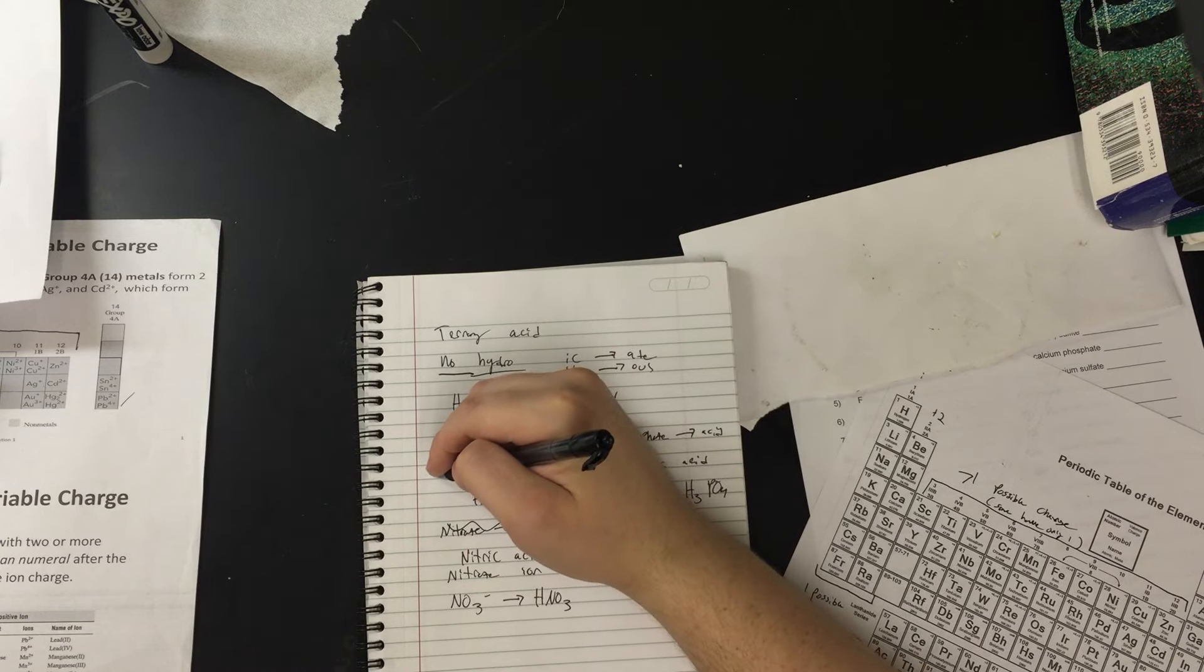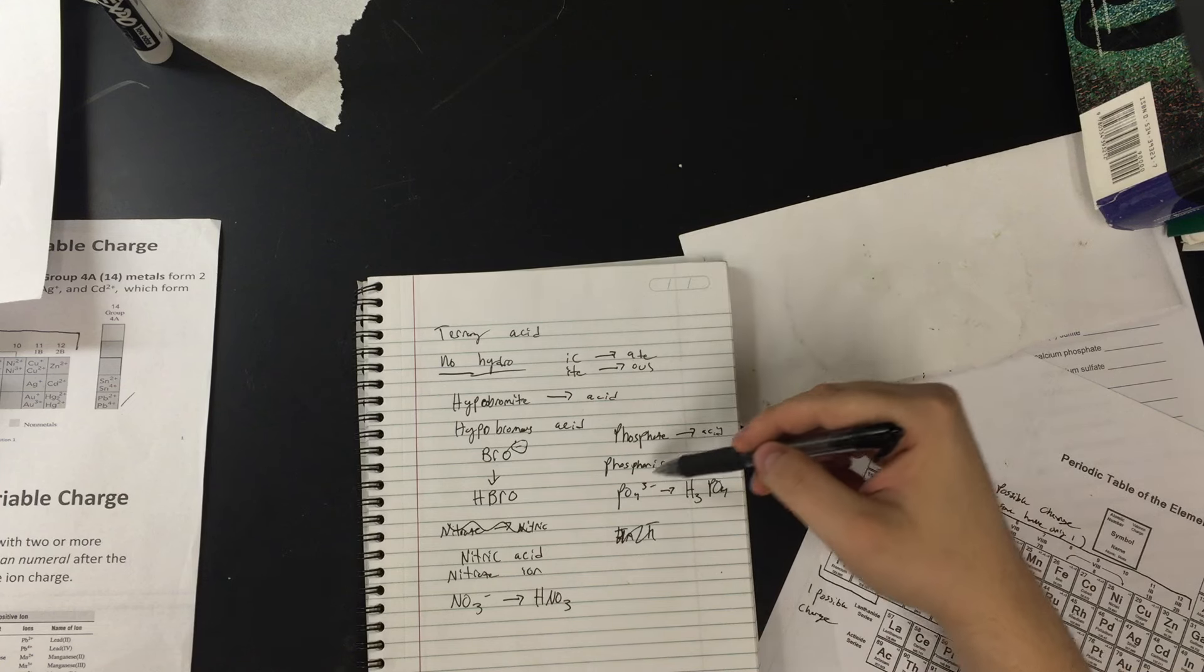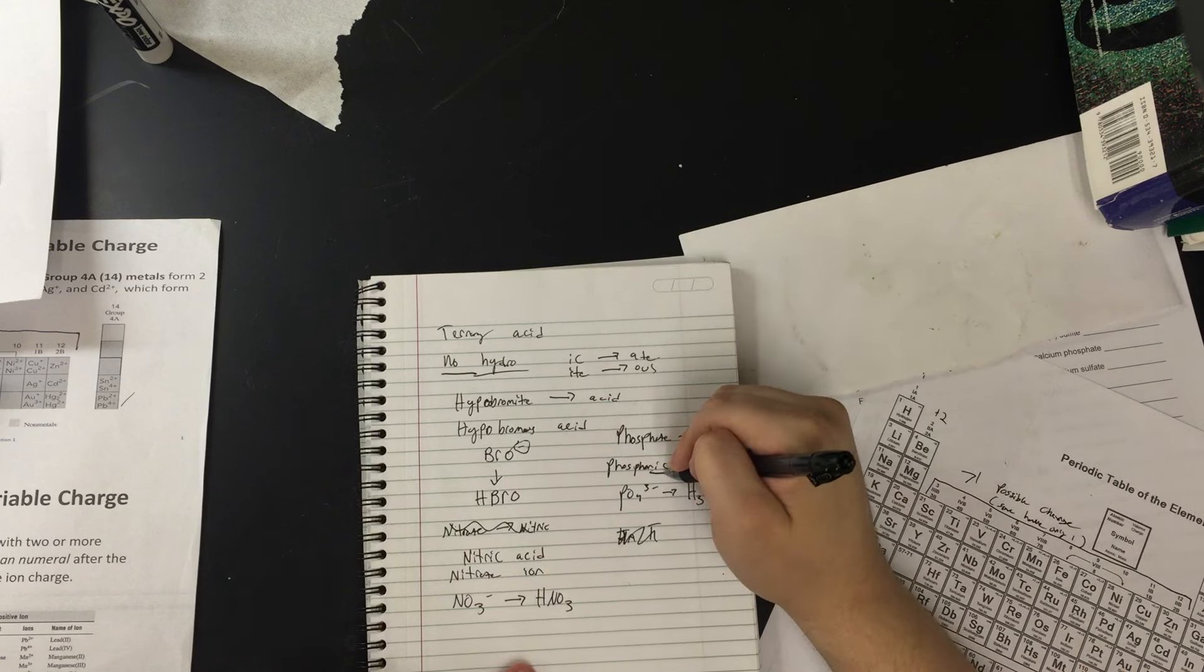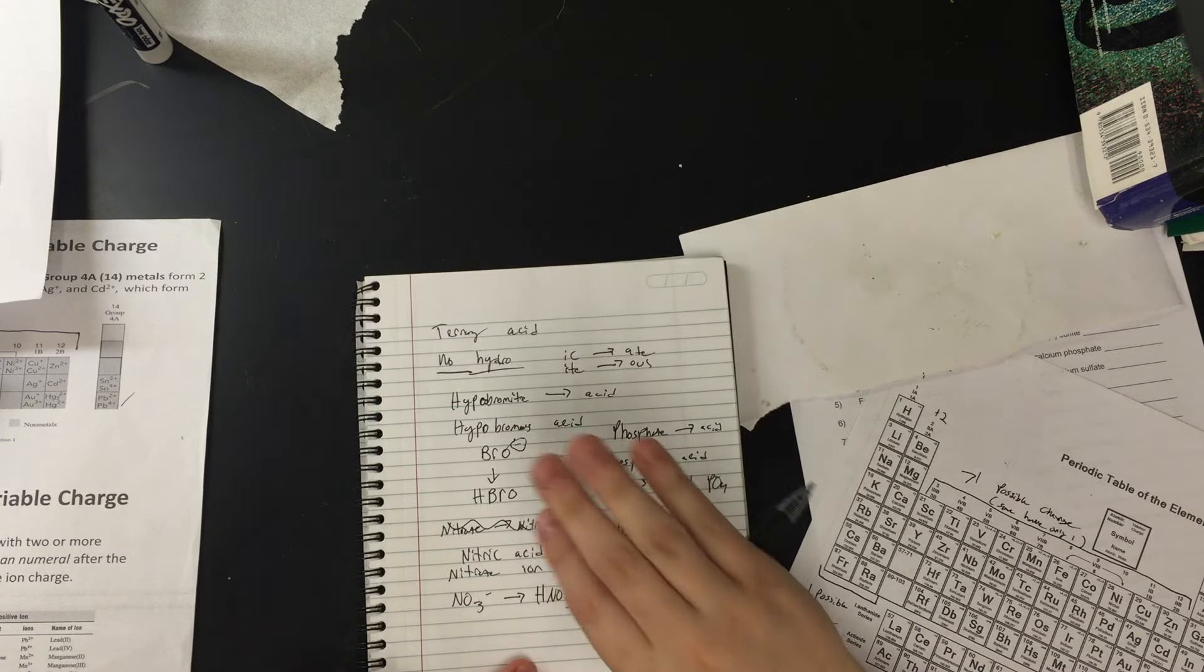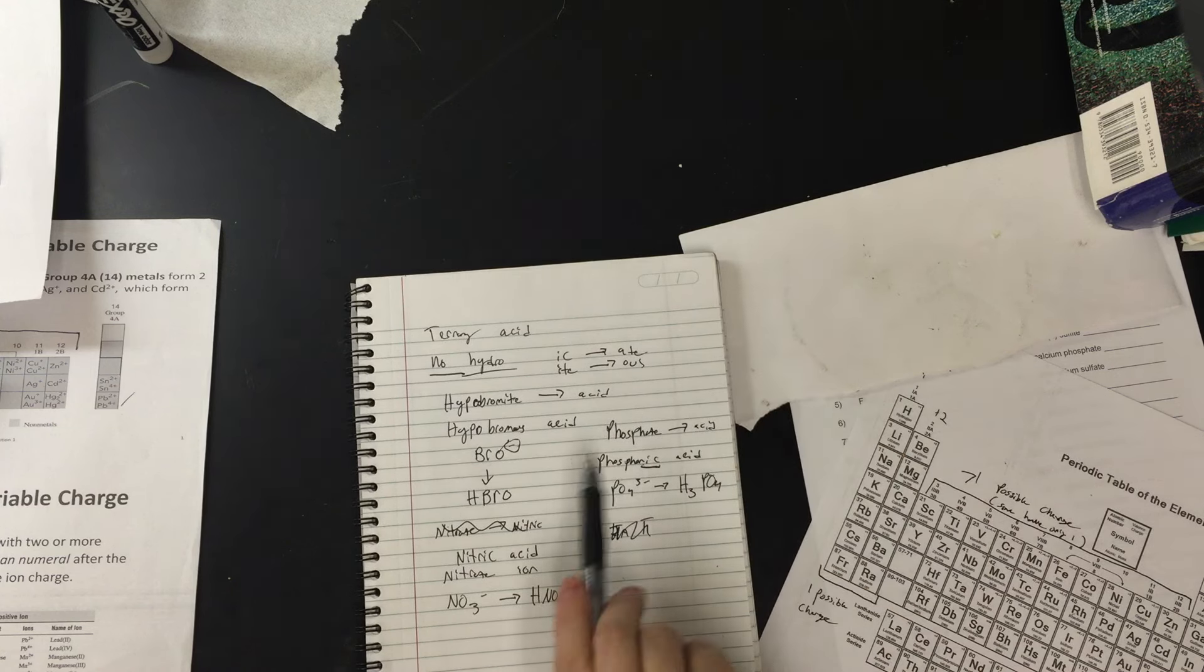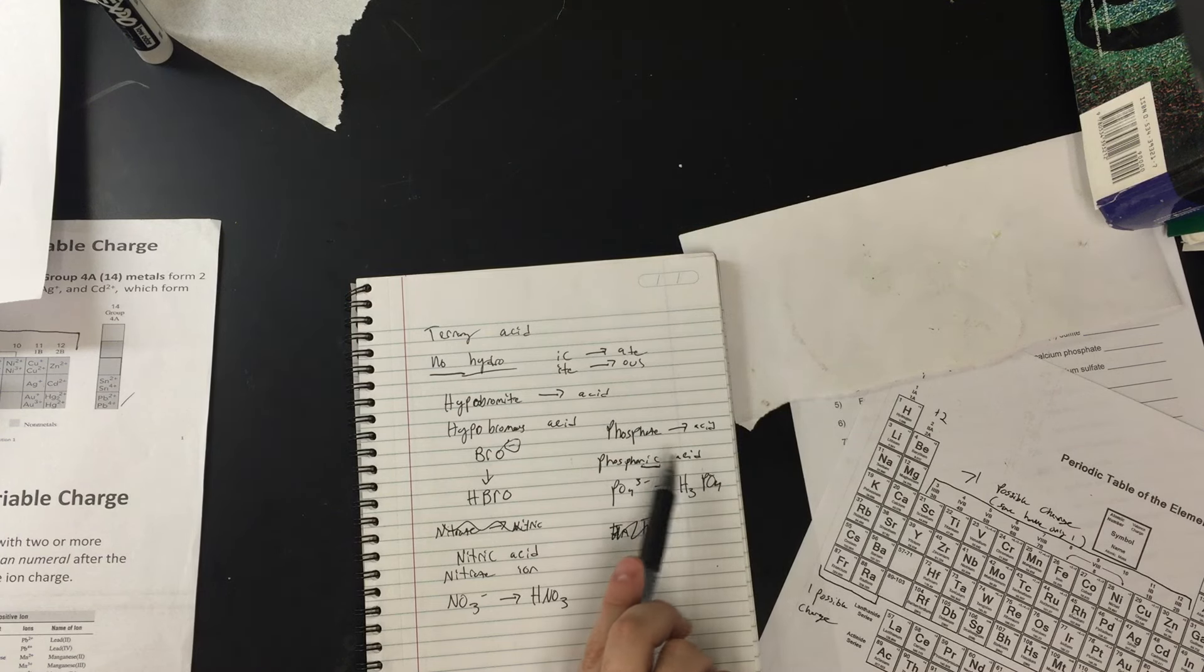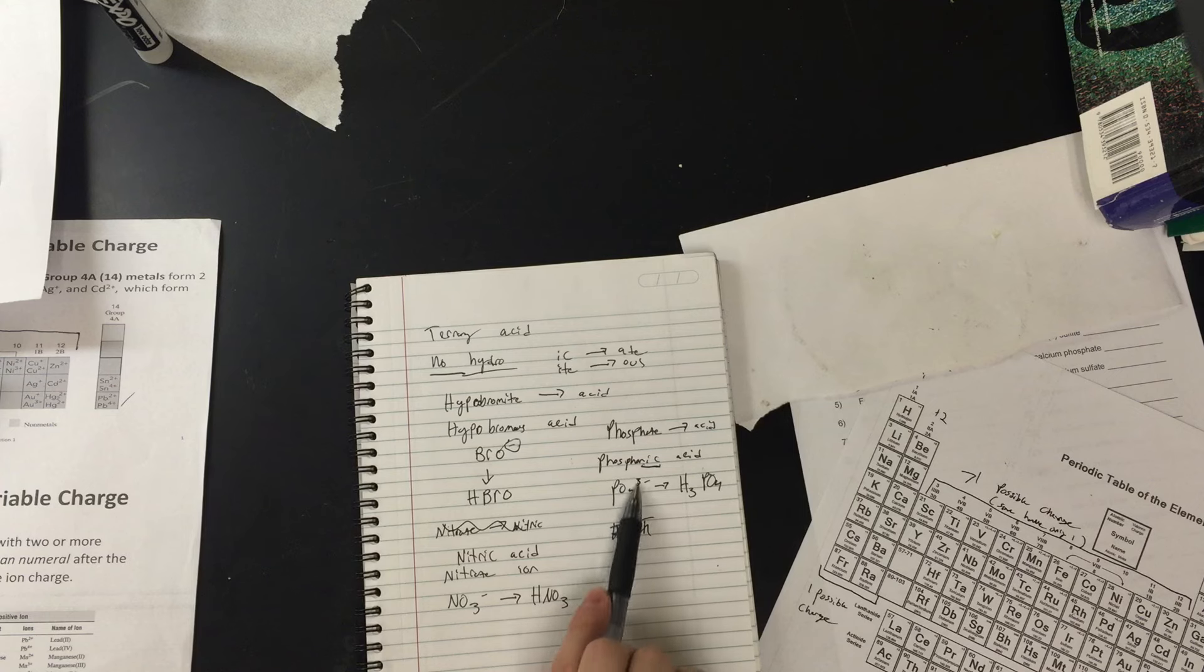What if I gave you something like phosphoric acid? So phosphoric acid. If we see phosphoric acid, we notice there's no hydro in front. No hydro, it's going to be ternary. If it's ternary, most likely it's going to involve a polyatomic ion. Phosphoric acid. Ic goes to ate. Phosphate. So it's going to be comprised of a certain amount of H's and some phosphate. So PO4 3 minus, that's a phosphate group.